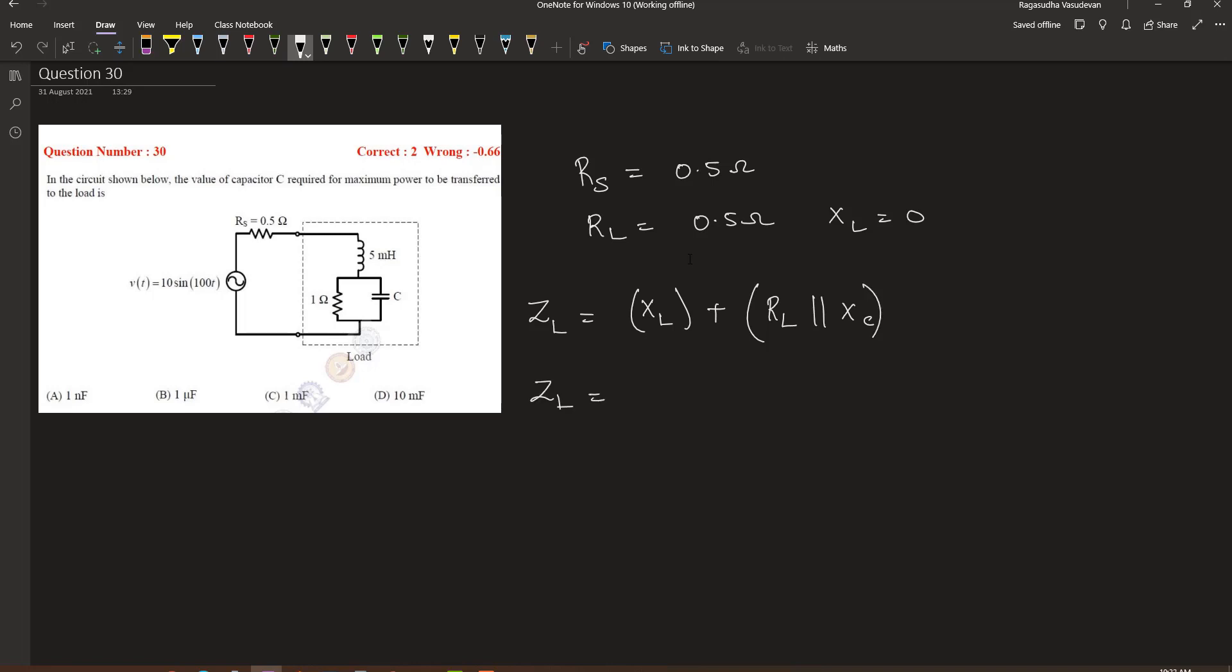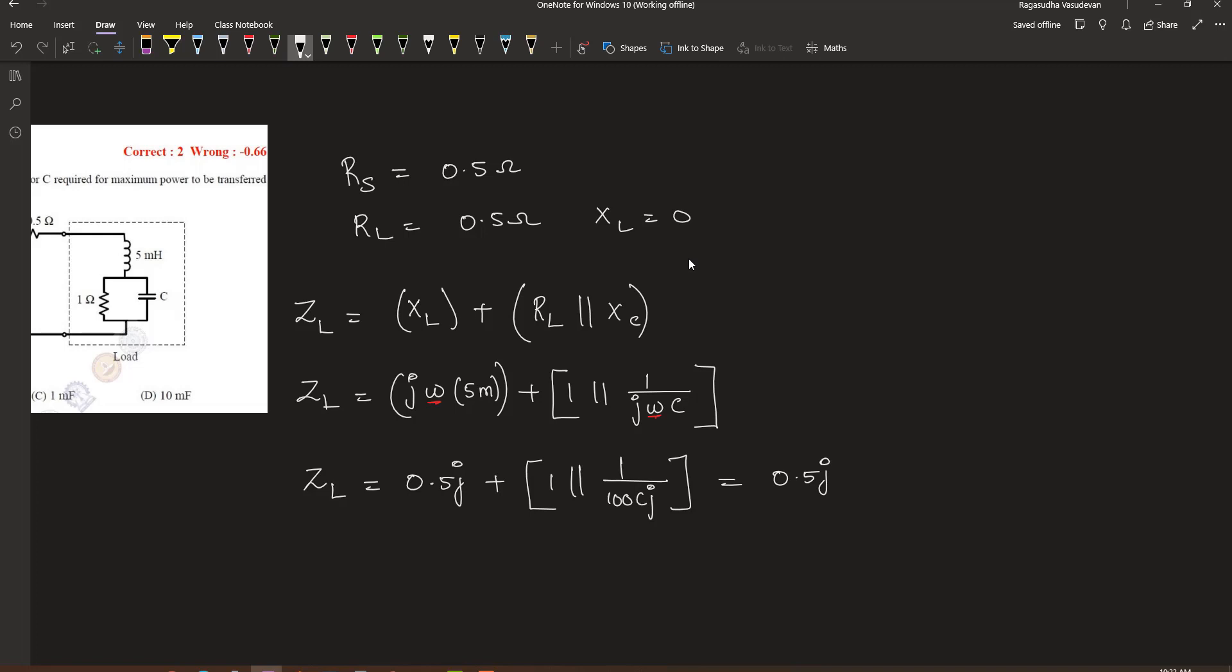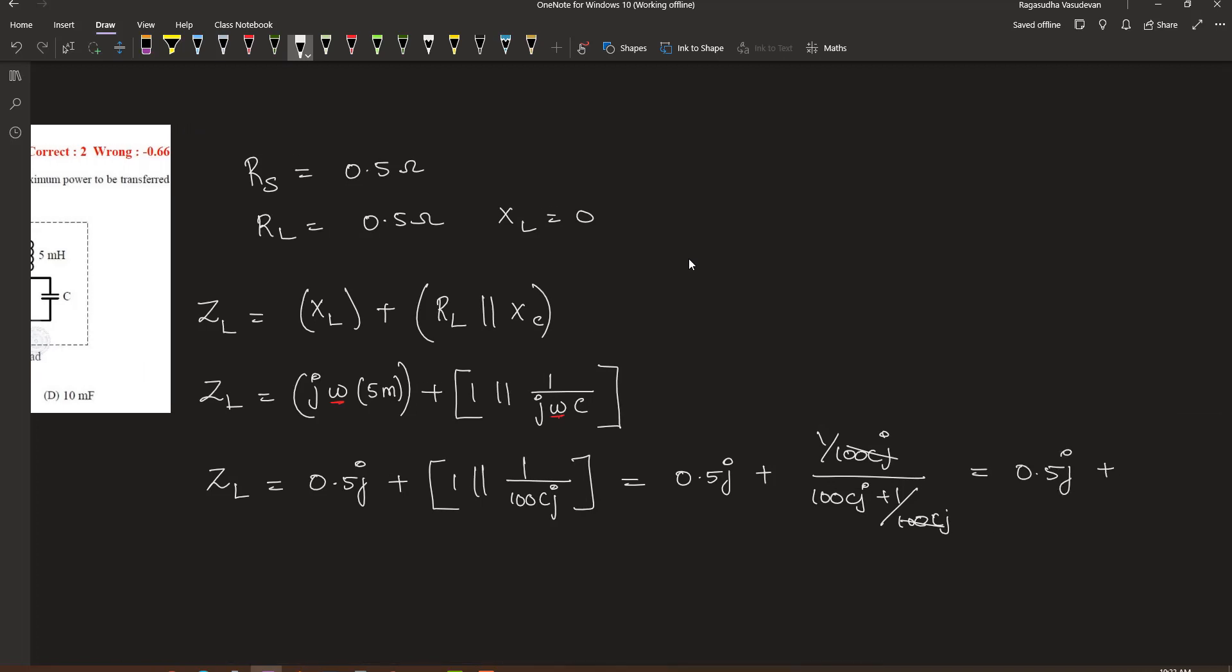So ZL is equal to j omega L plus the parallel combination. From the question we can infer that the value of the angular frequency is 100, and hence we can substitute the values. So ZL is 0.5j plus 1 parallel with 1 divided by 100Cj, which is given by 0.5j plus 1 by 100Cj divided by 100Cj plus 1, which is equal to 0.5j plus 1 divided by 1 plus 100Cj.